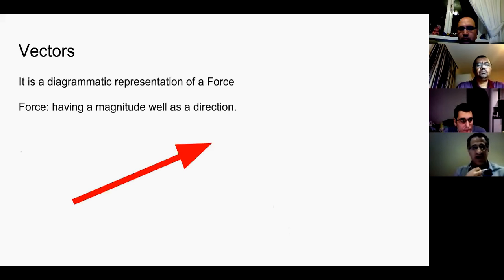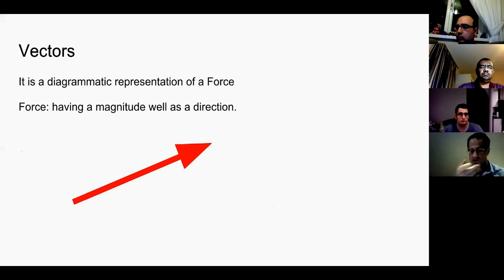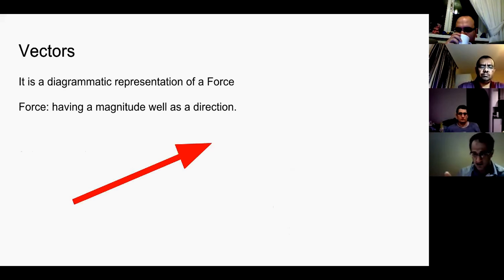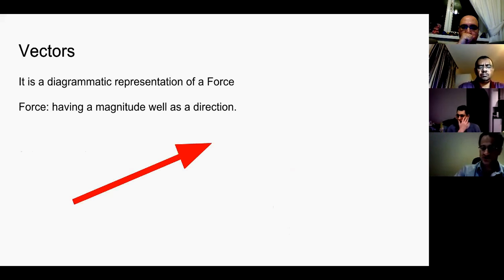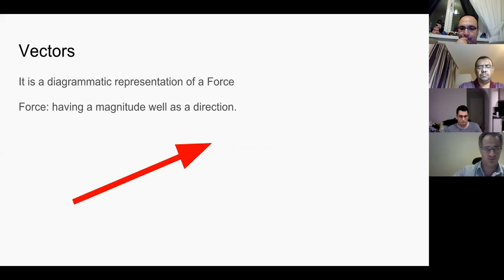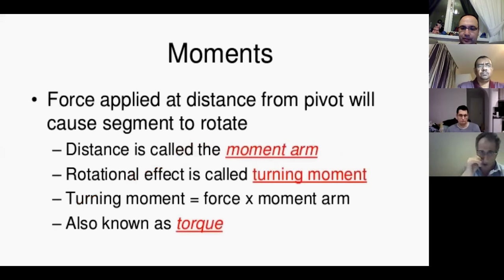We're also going to work with vectors. A vector is a diagrammatic representation of force. Force has both magnitude and direction. When you draw an arrow, the arrow indicates magnitude and the tip of the arrow tells you the direction. A shorter arrow means a smaller magnitude of force; a longer arrow means a greater magnitude of force.